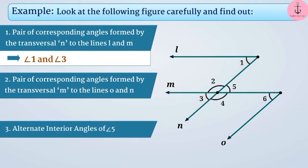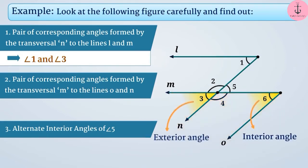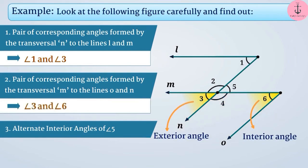The angles formed by transversal M to lines O and N are angle 2, angle 3, angle 4, angle 5, and angle 6. The vertices of angle 3 and angle 6 are different; both are formed on the same side of the transversal, with one being an interior angle and the other an exterior angle. So they form a pair of corresponding angles, and there is no other such pair for transversal M.